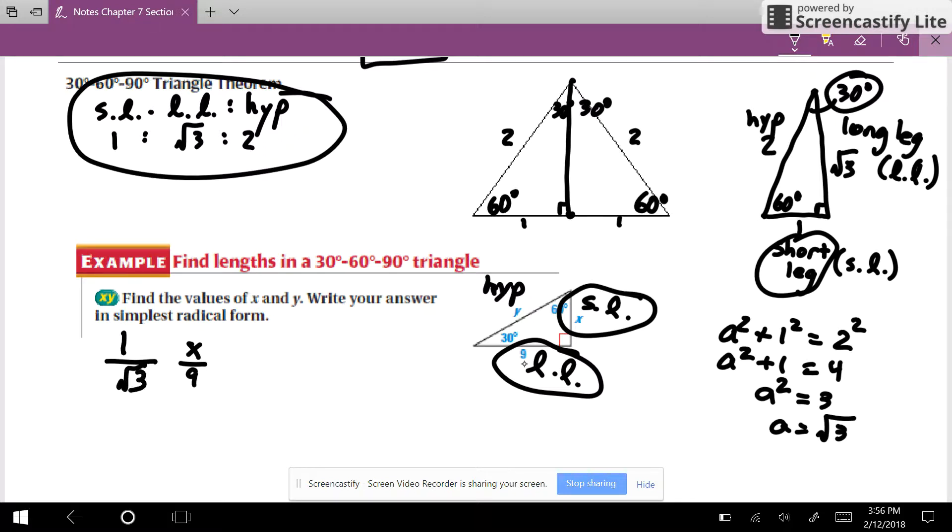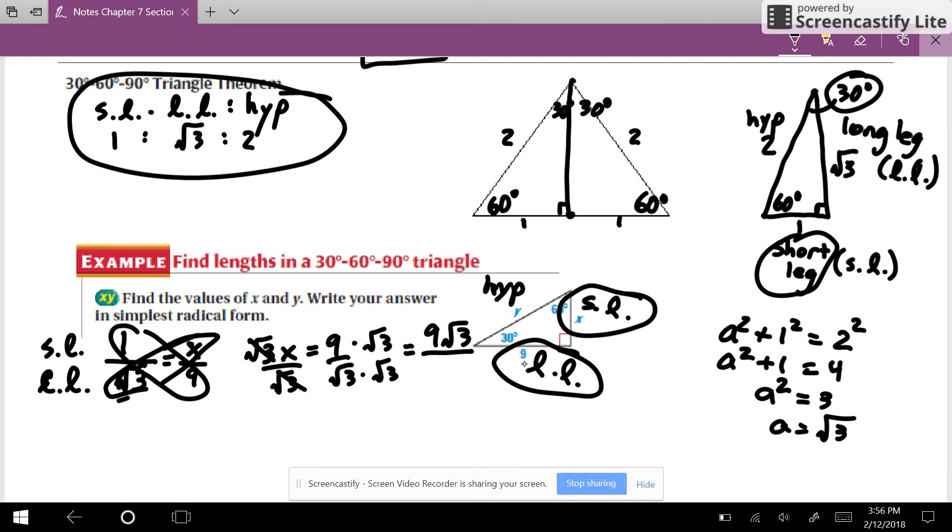So x over 9 equals 1 over square root of 3. Cross products. X times the square root of 3 equals 1 times 9, which is 9. Here I'm going to divide by my square root of 3. So 9 over square root of 3, I have to rationalize that, so I multiply the top and the bottom by square root of 3. So on the top, I have 9 square root of 3, and the denominator is square root of 3 times square root of 3, which is 3. And then my 9 and my 3 simplify, divide by 3, giving me my answer, 3 square root of 3.